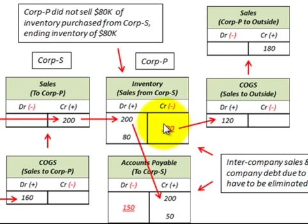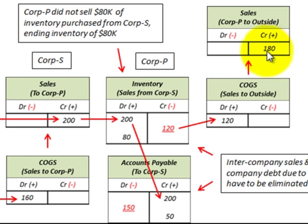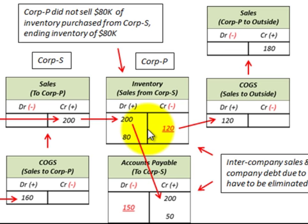Looking at Corporation P's inventory account, they sold $120,000 worth of the purchases made from the sub-corporation. That $120,000 in inventory flows into cost of goods sold for outside sales, sold to an outside party for $120,000, with total sales to outside parties of $180,000. Only $120,000 of the $200,000 worth of goods purchased from Corporation S were sold, leaving a remaining inventory of $80,000 that we must account for in the consolidation.